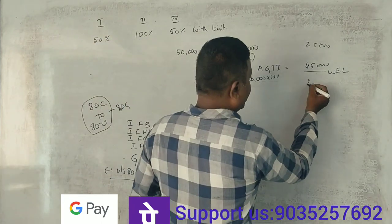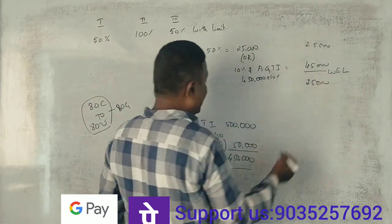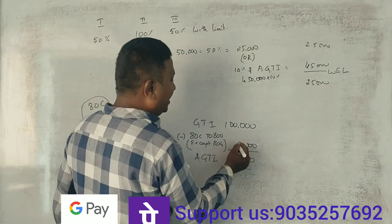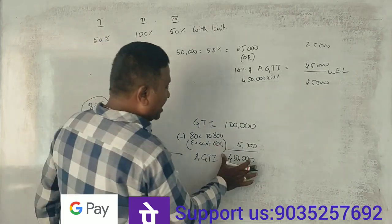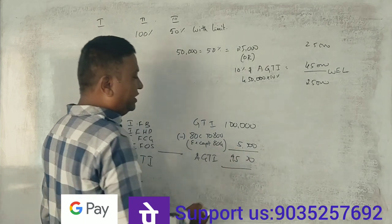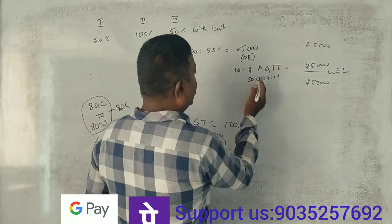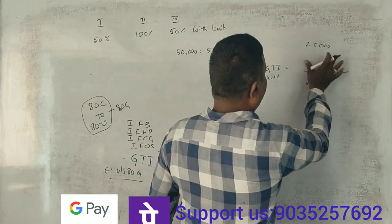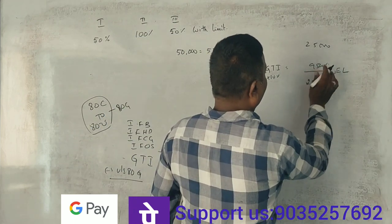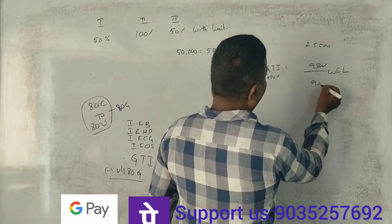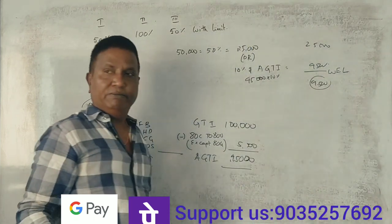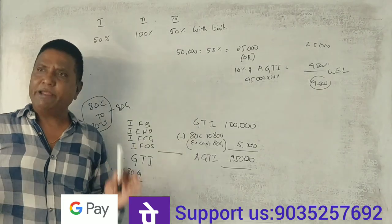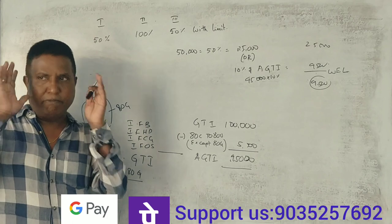So 25,000 is the deduction. Suppose the donation is 1,00,000, 50% is 50,000. Deduction under 80G is 50,000. Now adjusted gross total income is 9,50,000. So 10% is 9,500. Compare these - you get 9,500 deduction, whichever is lower.